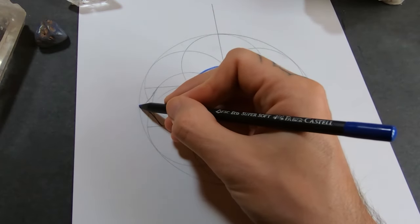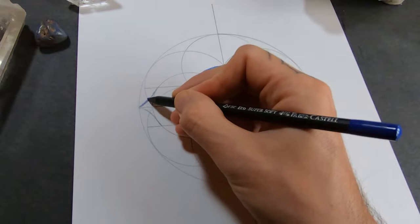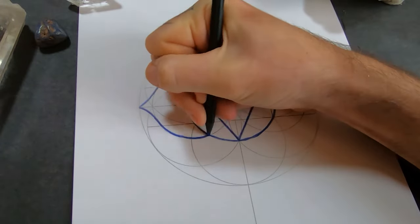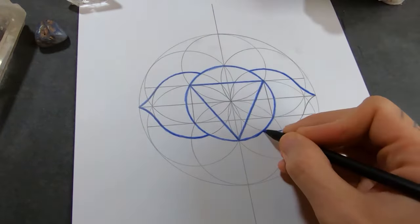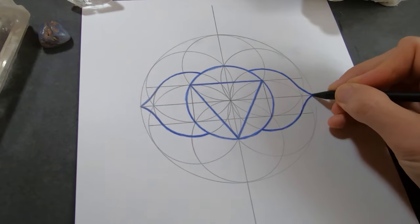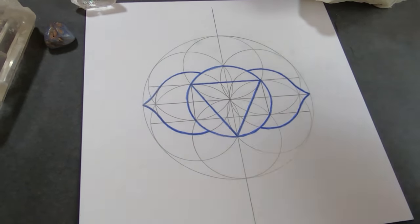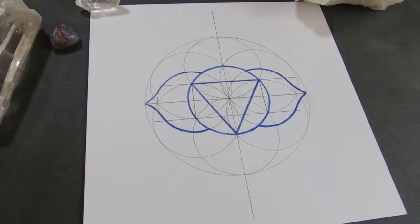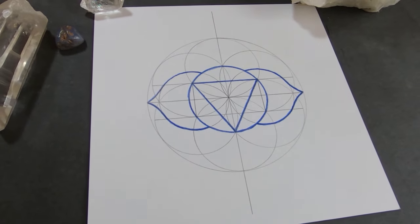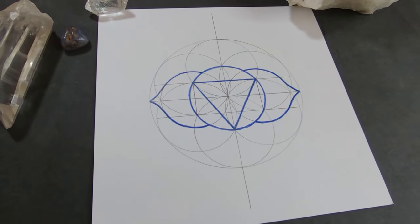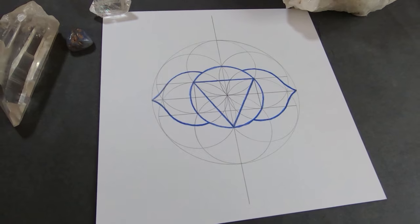And that's it. That's all there is to it. It's a mega simple one, just two petals. Hope you found that useful. If you did let me know in the comments, hit the like button. Join the channel if you want to support me making these tutorials. And I'll see you in the next one, which will be the last in the chakra series, the crown chakra. Thanks for watching.